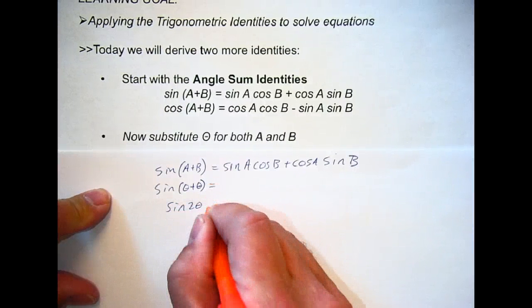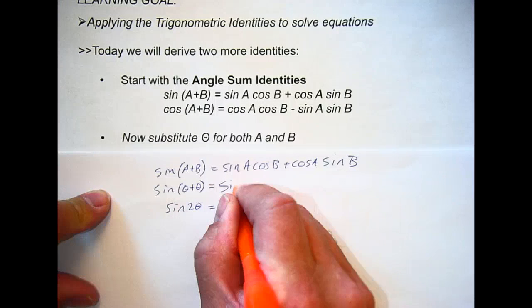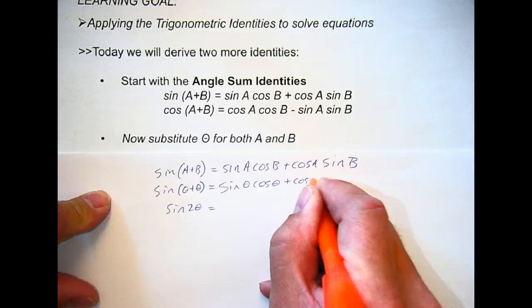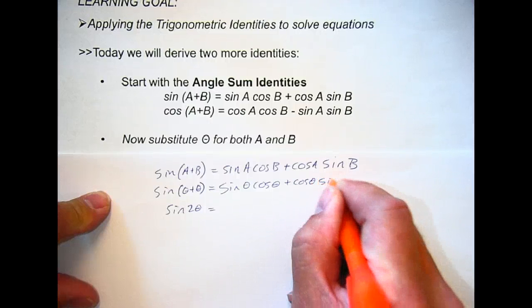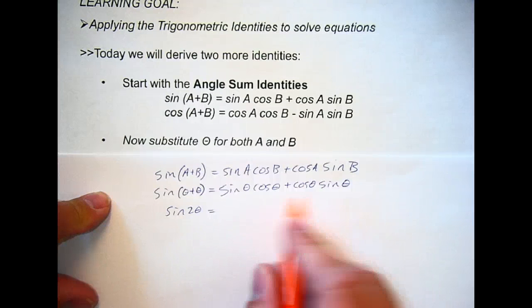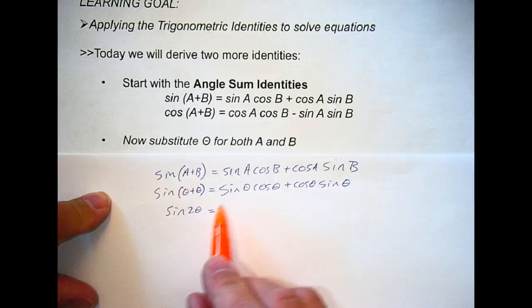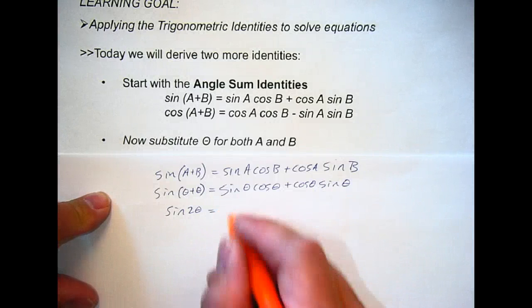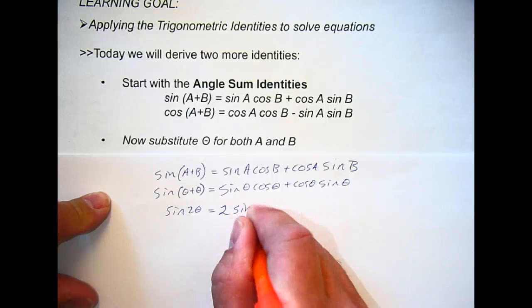which we also know is sine 2 theta. Sine 2 theta, I'm also plugging in theta here, theta there for all the A's and the B's. And I now have sine theta cos theta plus cos theta sine theta. Or we can multiply in any order, so this could be read as sine theta cos theta plus sine theta cos theta, or 2 sine cos theta.